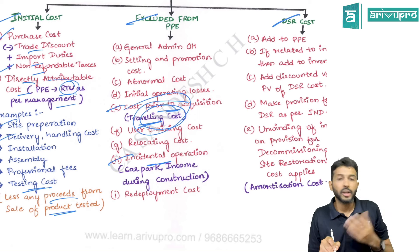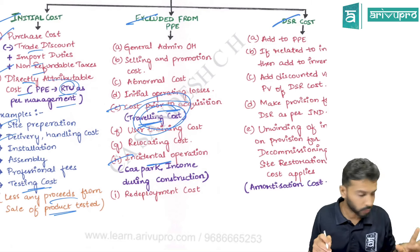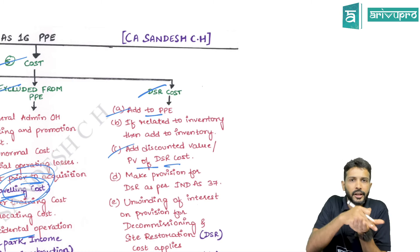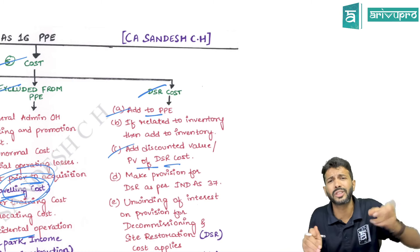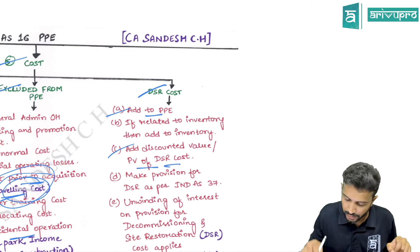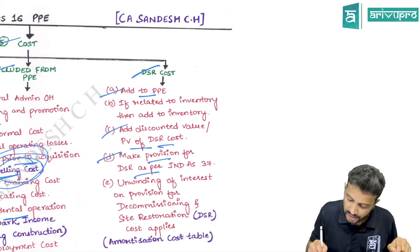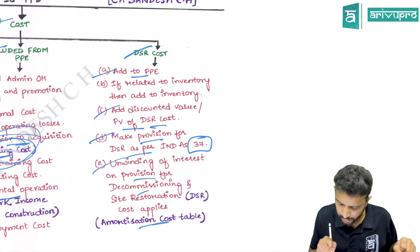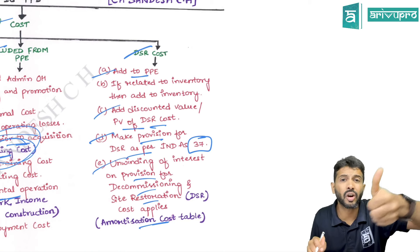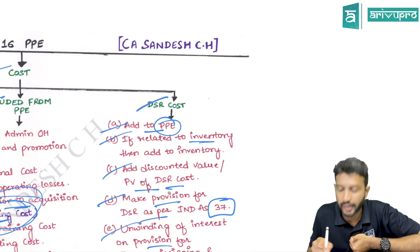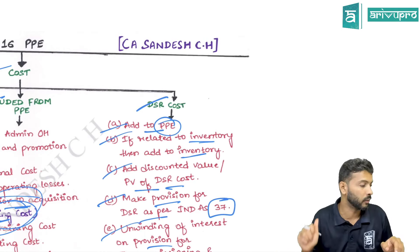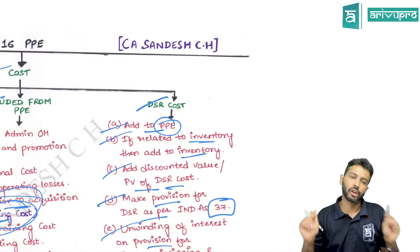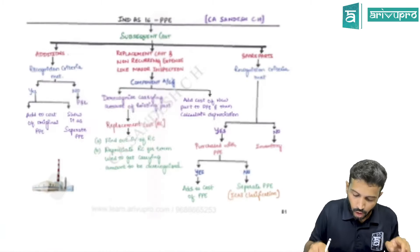Incidental operation expenses and income are both transferred to P&L. For DSR costs, only the present value can be added to PP — the difference between total DSR value and present value represents time value of money or finance charges, which go to P&L. The DSR provision is accounted under IND AS 37, and each year the provision balance increases through an amortization table. Importantly, DSR cost relating to PP is added to PP cost; DSR cost relating to inventory — for example, oil extraction costs in a Reliance oil well scenario — is added to inventory cost.